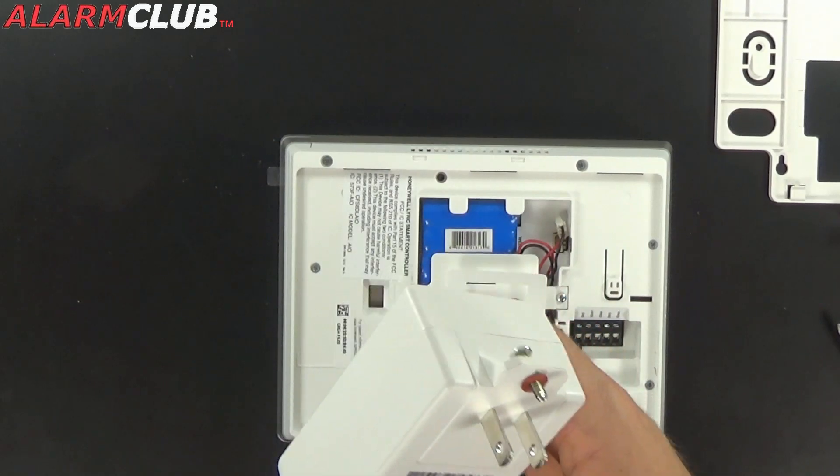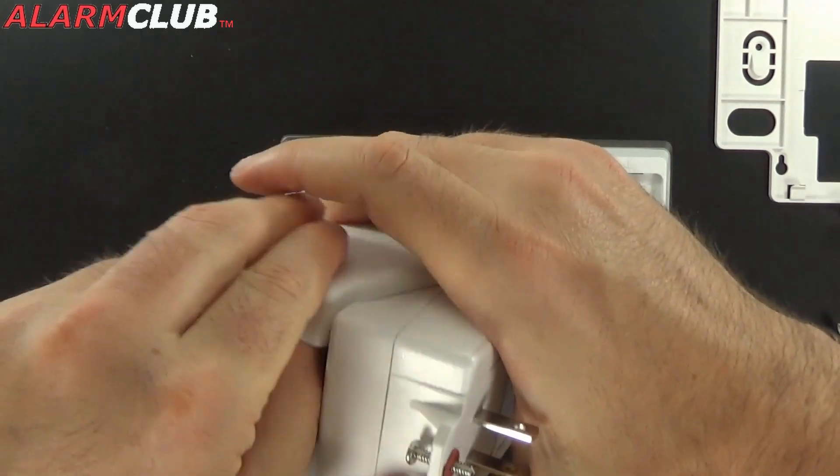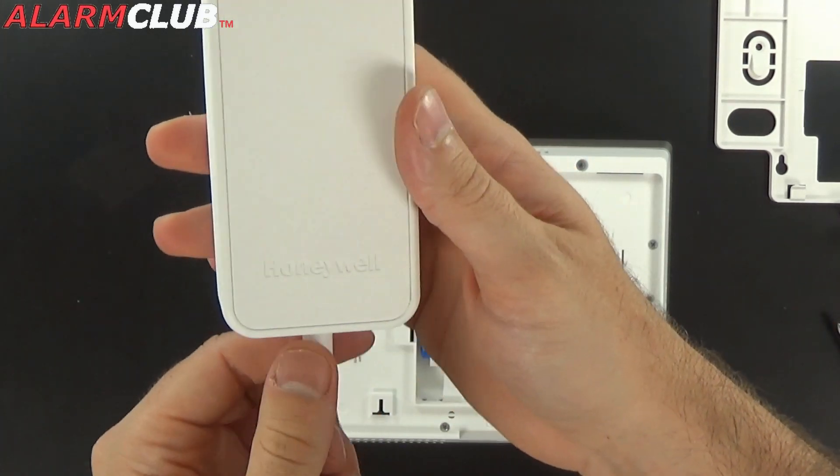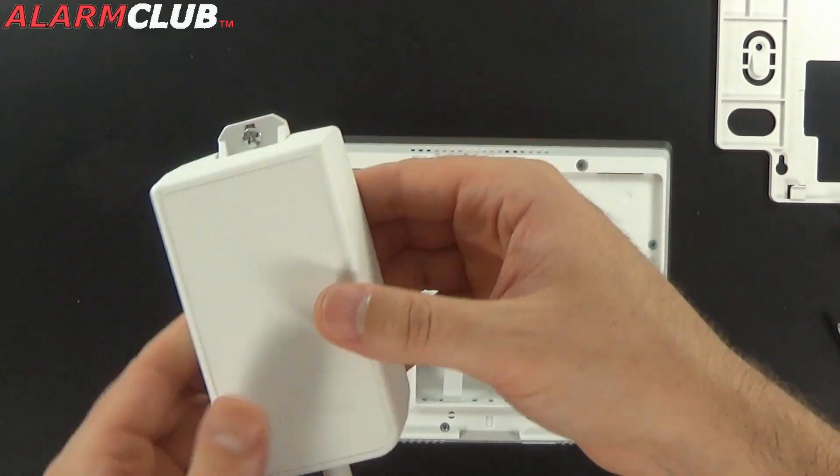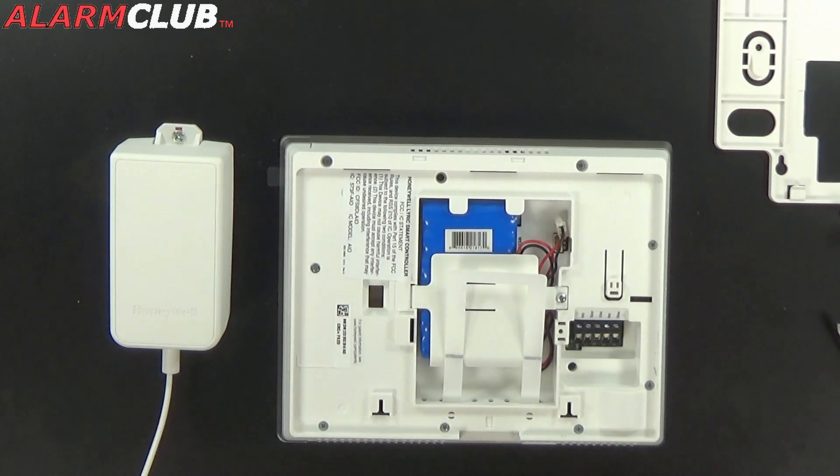And we can go ahead and put it back into the protective sleeve here. Just like that. So it looks a lot better aesthetically this way and prevents anybody from really tampering with it. So you have the transformer all wired up.